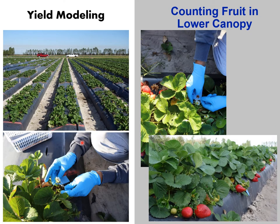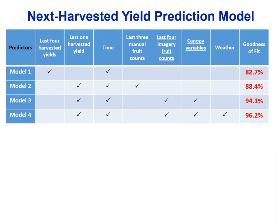We also used this type of information to predict yield. We collected information about yield in association with canopy size, along with other information such as yield from the previous week or two and weather conditions. We used canopy metrics extracted from high-resolution imagery in building strawberry yield prediction models. In this slide we can see different models with different variables included — including the canopy metrics extracted from the images — and we can see that including these canopy metrics improved the model's goodness of fit.